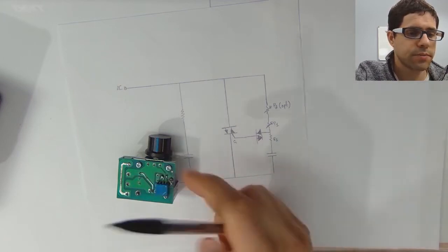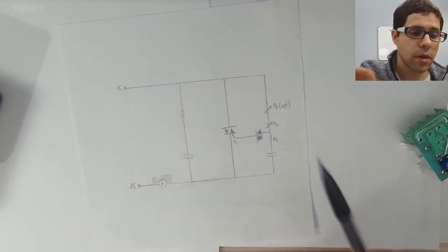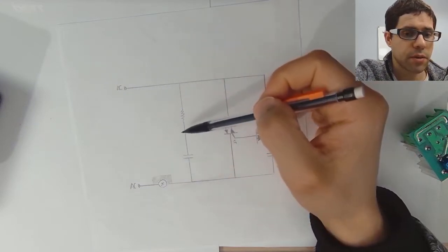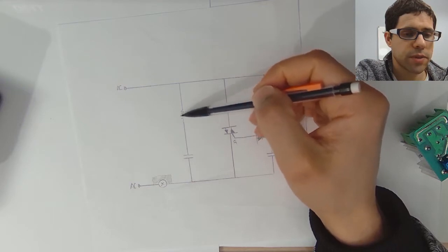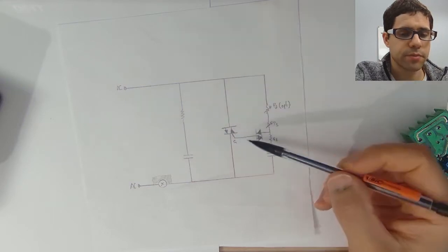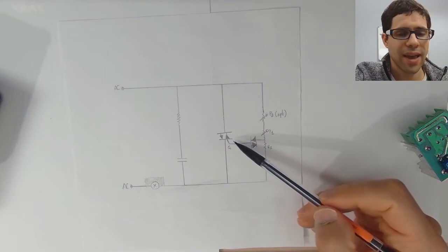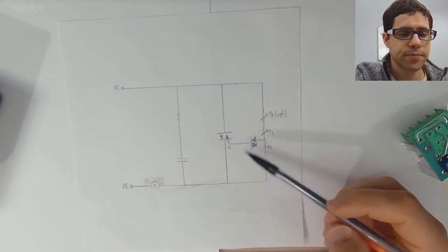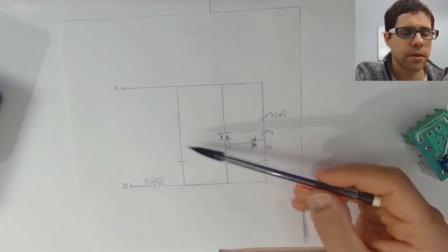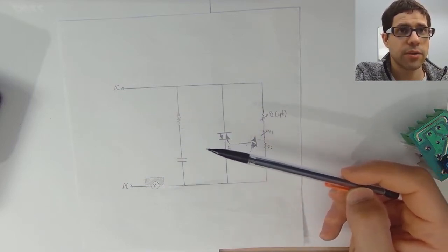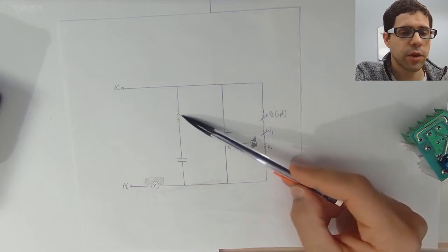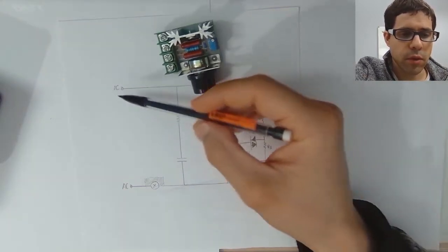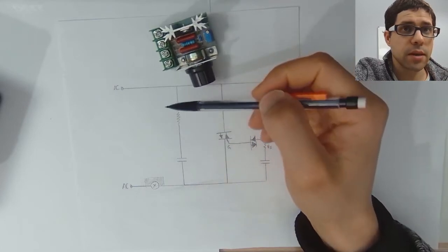The first thing we have is the snubber circuit, composed of one resistor and one capacitor. As this is a four quadrant triac, it doesn't have the best immunity against false triggering. If we were to use a three quadrant triac with higher immunity, we could completely omit these two components.